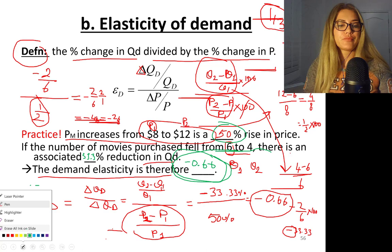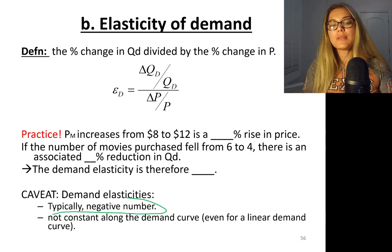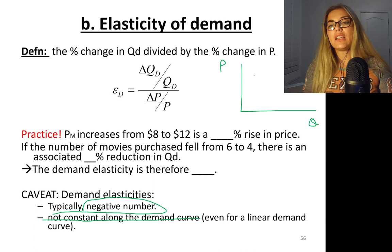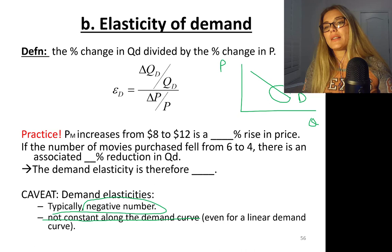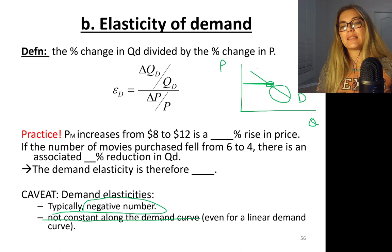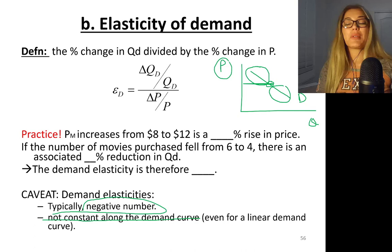Demand elasticities are negative numbers. They are not constant along a demand curve — even if it's a linear demand curve. At higher price levels, you have more elastic demand; here you have unit elastic; at lower prices, the elasticity is lower and more inelastic. When the price is high, people tend to respond even more strongly. So let's learn about two extremes.